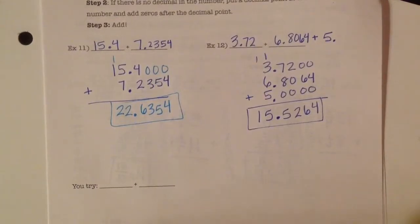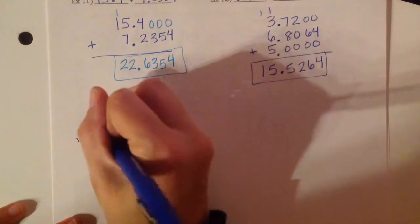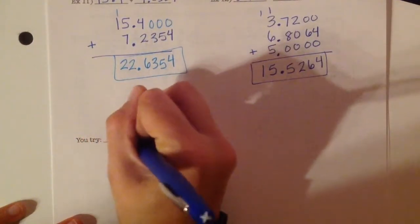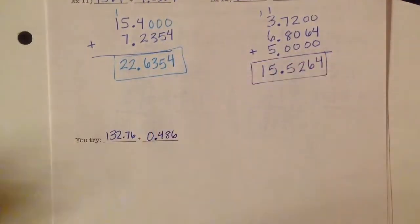All right. The number to try on your own. 132 and 76 hundredths plus 486 thousandths.